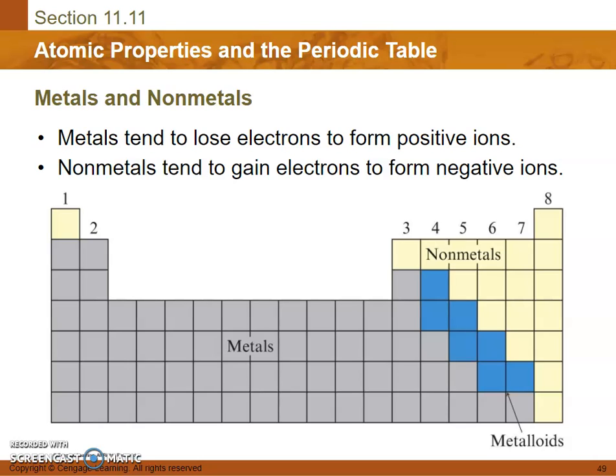Metals tend to lose electrons to form positive ions, whereas nonmetals tend to gain electrons to form negative ions. They are negative ions because they are gaining negative electrons. Metals form positive ions because they are losing negative electrons, so they have a higher positive charge.